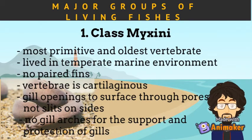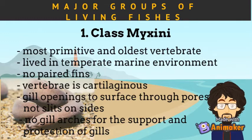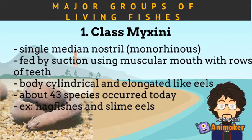Class Mixini includes the living hagfishes or slime eels. They are the most primitive and oldest vertebrates, dating to the Ordovician period about 500 million years ago. They live in temperate marine environments. Their structure includes having no paired fins, and the main axial skeleton or vertebrae is cartilaginous. The gill openings to the surface have pores, not slits on sides, and there are no gill arches for support and protection of gills. They also have one median nostril, and feed by suction using a muscular mouth with rows of teeth. The body is cylindrical and elongated like eels, with about 43 species occurring today.